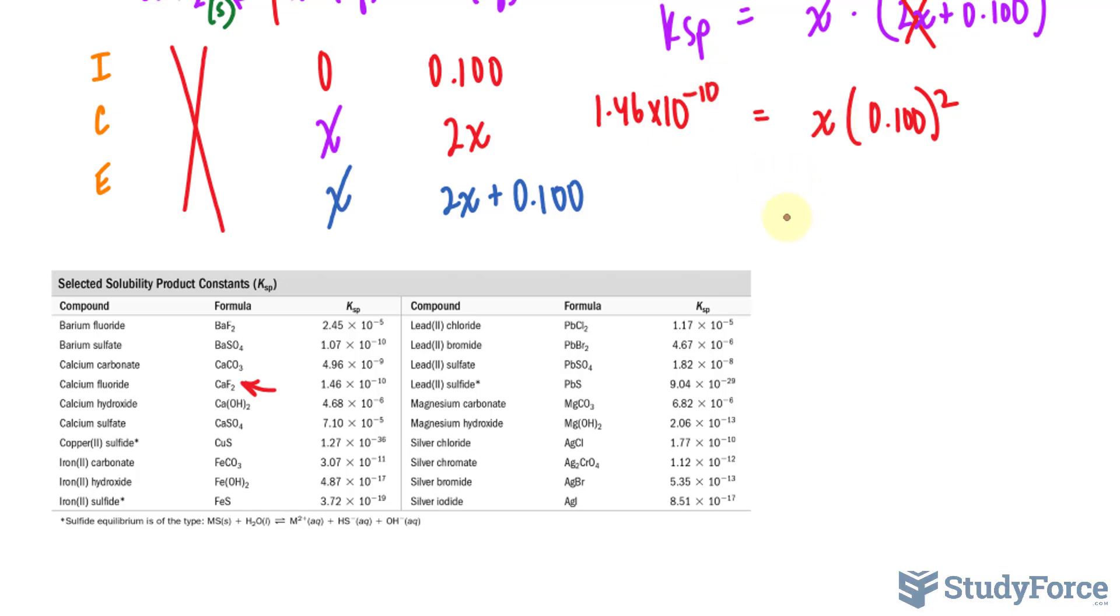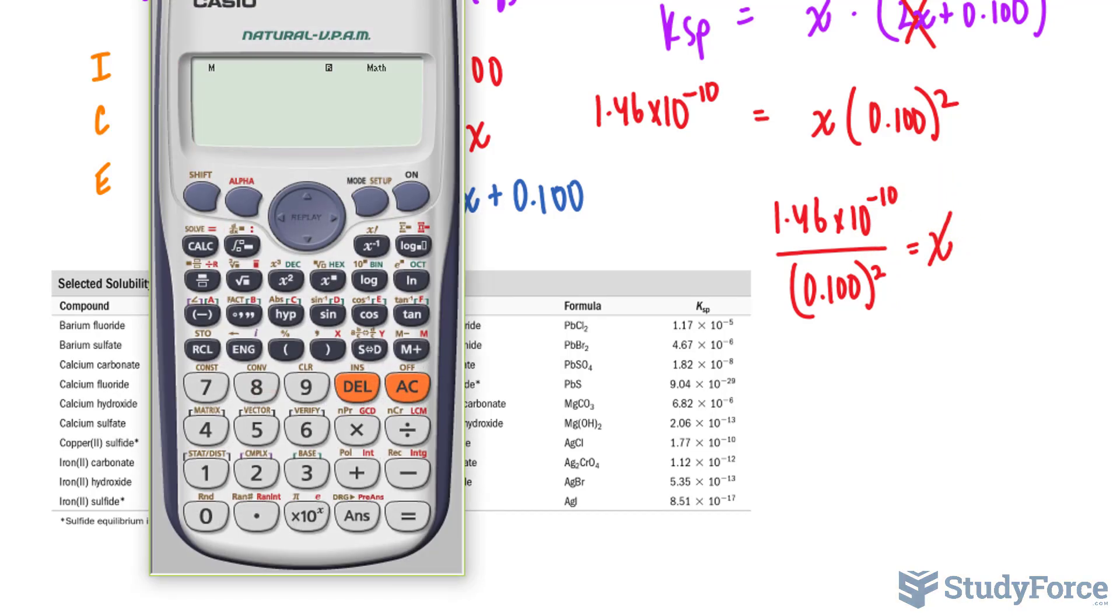And we'll solve for X. So 1.46 times 10 to the power of negative 10 over 0.100 raised to the power of 2 is equal to X. So now we have the number at the top divided by the number at the bottom. That's our X value.